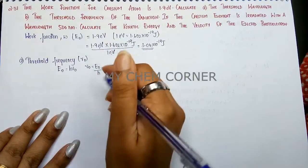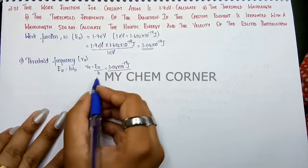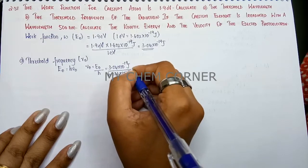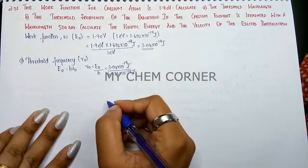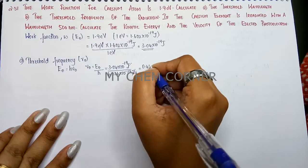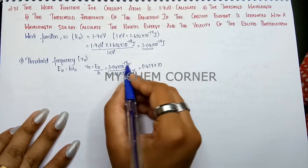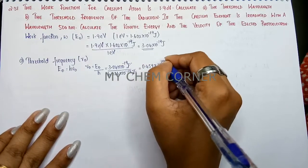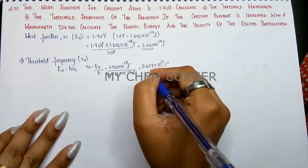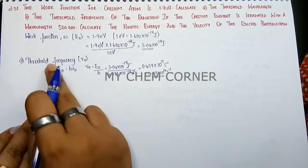Substituting: ν₀ = 3.04 × 10⁻¹⁹ joules divided by h = 6.626 × 10⁻³⁴ joule·second. The joule units cancel. Solving, 3.04 divided by 6.626 gives 0.459, and the power becomes 10⁻¹⁹⁺³⁴ = 10¹⁵ per second. Shifting the decimal, the threshold frequency is 4.59 × 10¹⁴ s⁻¹.